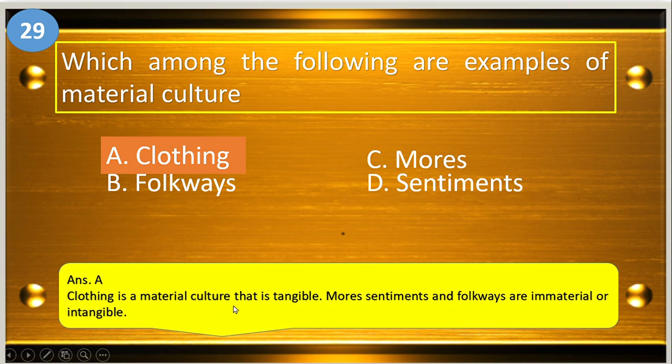Clothing is a material culture that is tangible. Mores, sentiments, and folkways are immaterial or intangible.